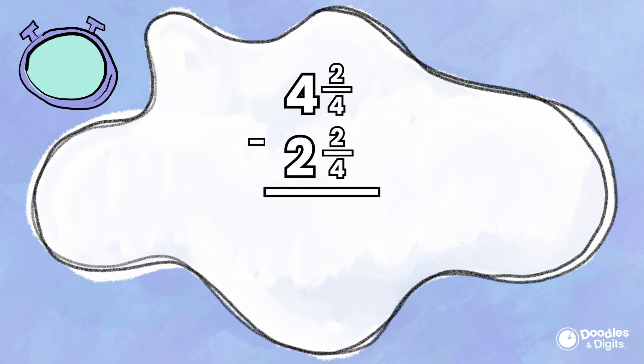Wait a minute, zero-fourths? That's the same thing as zero. So we actually are not going to have a fraction portion of this mixed number. So we're going to move on to the whole numbers. Four minus two. Four minus two equals two. So our answer to this problem is two wholes.